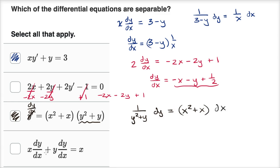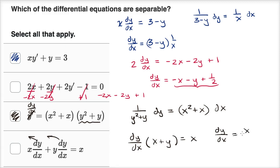For the last choice, the derivative has been distributed. Factoring it out gives dy/dx times (x + y) equals x, so dy/dx equals x over (x + y). It's not obvious how to write this as a function of x times a function of y, so this one is not separable. Only the first and third equations are separable.